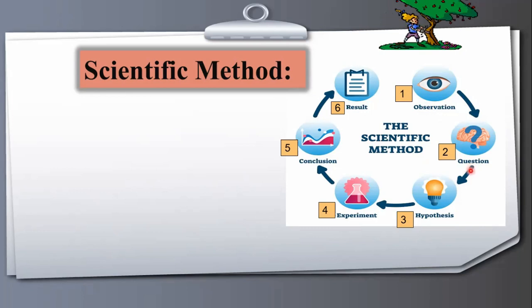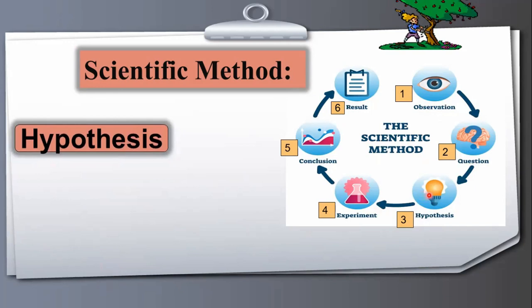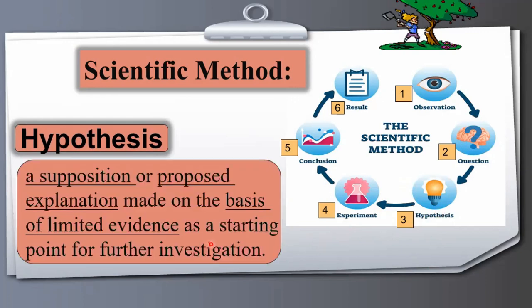The scientific method exactly is the systematic process: questions, hypothesis, experiment, conclusion, results. Hypothesis is a topic I would like to explain. Others I believe are easier. Hypothesis is a possibility, an idea, an intelligent guess. When you have questions, you make an intelligent guess, you have an idea.